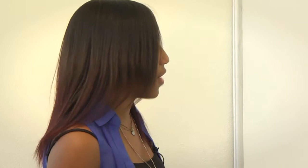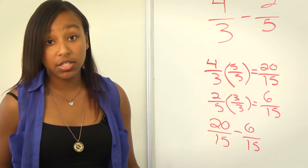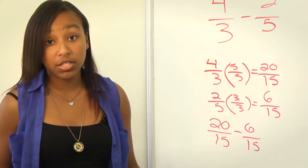So now that the denominators are the same, we can subtract the two fractions. So we'll have 20 over 15 minus 6 over 15. Once again we're not subtracting the denominators, we're just subtracting the numerators. So we'll end up with 14 over 15.